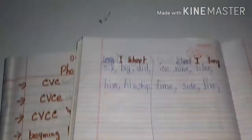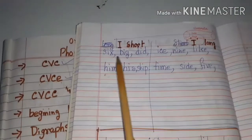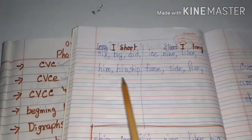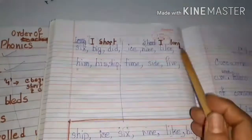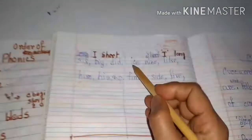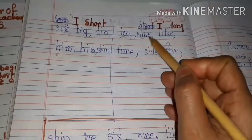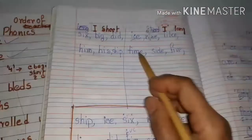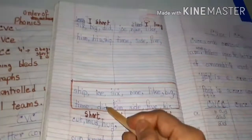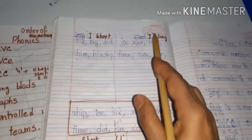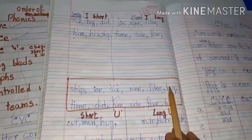The next one is short I. Short I words: six, big, him, his, ship — these are the short vowel. Long I: I underscore E — nine — I underscore E like this. Then again, you have to find out the words from the list and jot down which words are short and which are long.